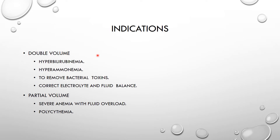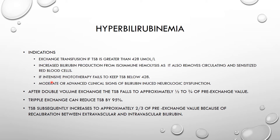The indications for a double volume exchange transfusion include hyperbilirubinemia, hyperammonemia, removal of bacterial toxins, and correction of electrolytes and fluid balance. Partial volume exchange is done if there is severe anemia with fluid overload, or with polycythemia or hyperbilirubinemia.